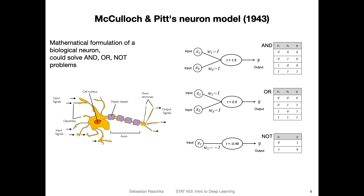Just to clarify how the mathematical model of a neuron relates to first-order logic functions, here's a quick overview. We have drawn three tables — AND, OR, and NOT — representing these different types of first-order logic functions. You can think of x1 and x2 as the inputs and y as the output. If both inputs are zero, the output is zero. If one of the two is zero, the output is still zero. You have to have both inputs equal to one to have an output of one — that's how an AND function works.